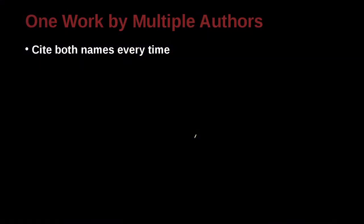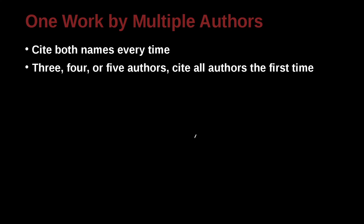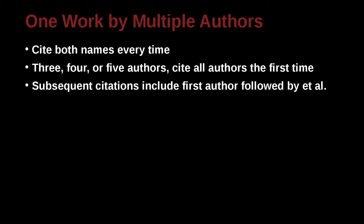What about a work, a journal, or a book that's by more than one person? If there are three, four, or five authors, then the first time you cite this, you need to include all of the authors. However, the second and following times you cite that, you can include just the first author followed by et al., which means 'and others.'